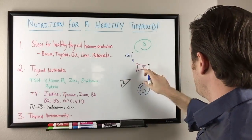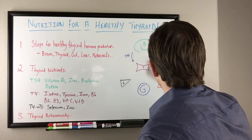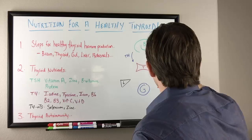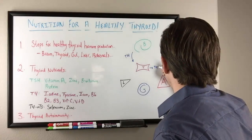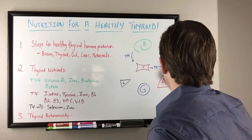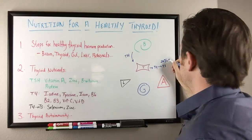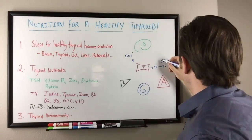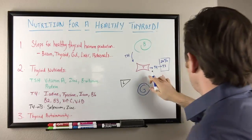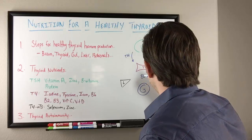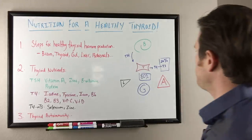From there, our thyroid spits out some T4 and about 20% of that T4 actually gets converted to T3 at the thyroid. We'll review some of the nutrients that we need to help that conversion. So 20% actually happens in the thyroid gland. The other 80% actually happens peripherally.